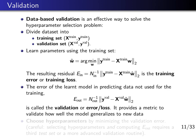The error of the learned model on the validation data — data not used for training — is computed by taking the weights w-hat obtained from training and evaluating the same error on the out-of-sample or validation data. This is called the validation error or validation loss. It gives us a metric to validate the trained model and tells us how well the model generalizes to new data.